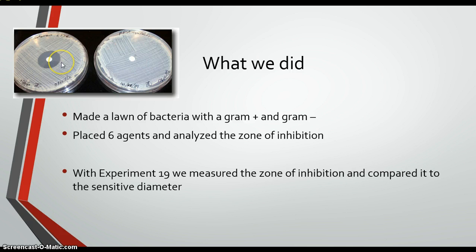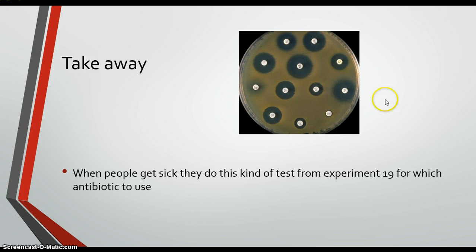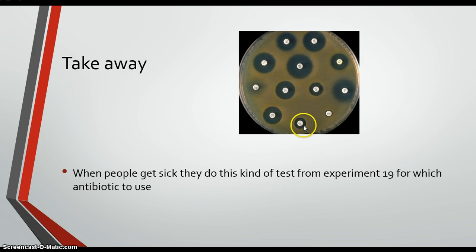This allows doctors to test which antibiotics to use when patients get sick. Here's a plate very similar to what we did in lab, showing which antibiotics to use and which not to use. You wouldn't use something with no zone of inhibition because none of the bacteria were killed, but you would use something with a very large zone of inhibition. One way doctors can approach this — though it may be somewhat antiquated — is to look at a plate like this and choose the effective antibiotic to cure the patient's infection. That's experiments 18 and 19.